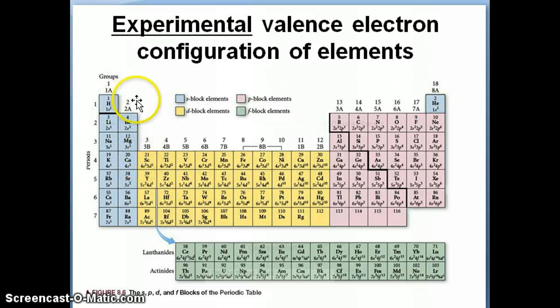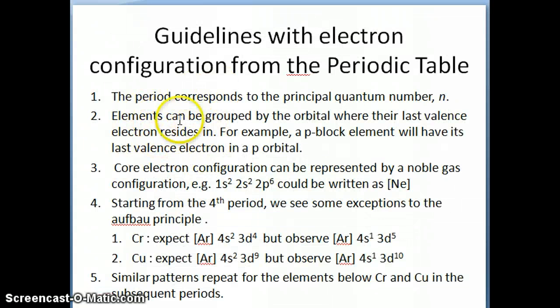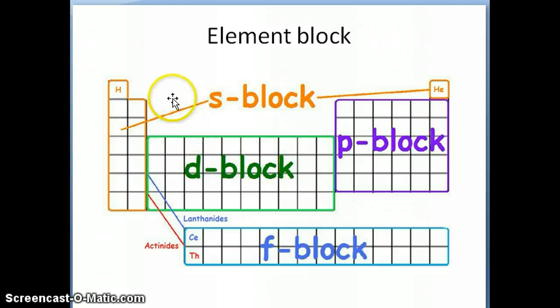What's useful is that it helps you determine what the starting element will be because this is what we refer to as the S block. The second guideline is that elements in the periodic table can be grouped by the orbital where their last valence electron resides in. For example, if an element belongs in the P block, what we mean by that is that its last valence electron is in a P orbital. The first two groups of elements are what we call the S block elements because their valence electrons are in S orbitals.